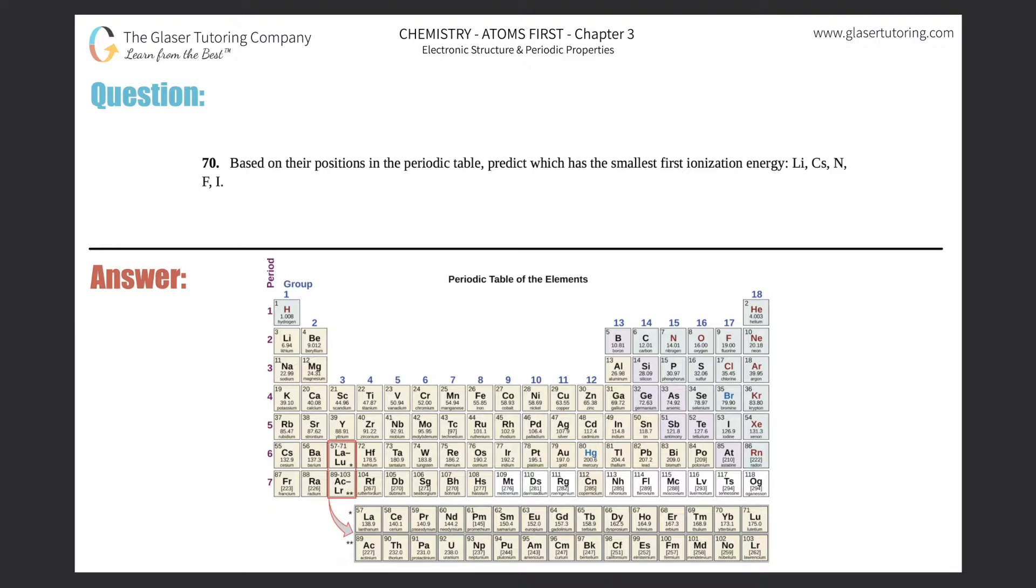Number 70: Based on their positions in the periodic table, predict which has the smallest first ionization energy: Li, Cs, N, F, or I. We did a very similar problem like this in number 69.